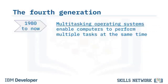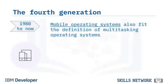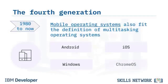The fourth and current generation brought computing into a new age with multitasking operating systems, including Linux, Windows, Mac OS, and Chrome OS, enabling computers to perform multiple complex tasks simultaneously. Mobile operating systems, including Android, Windows, iOS, and Chrome OS, also fit the definition of multitasking operating systems.